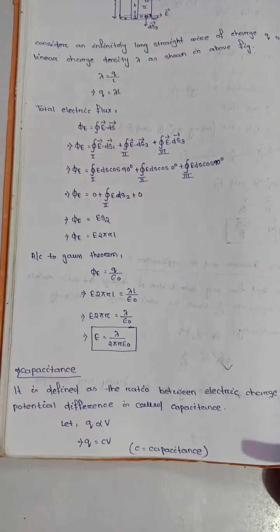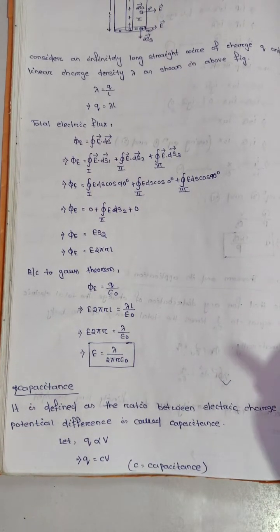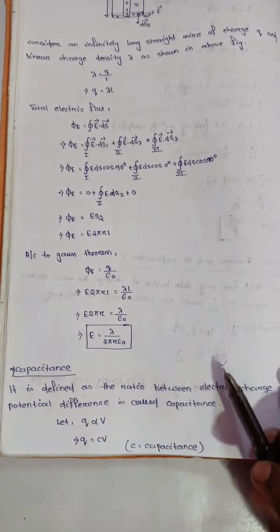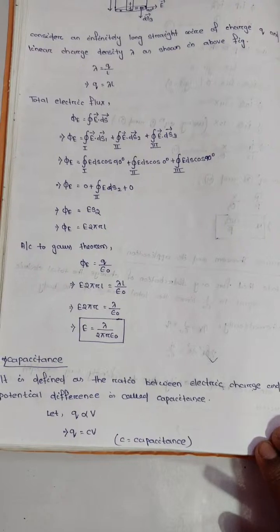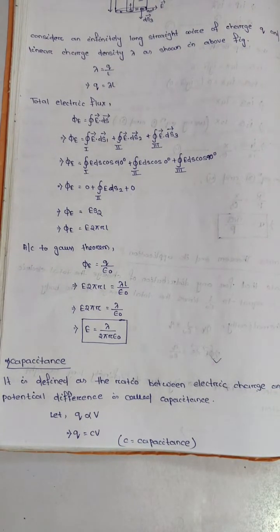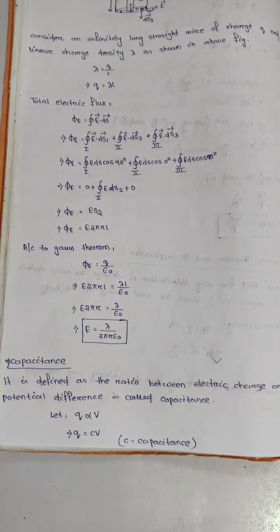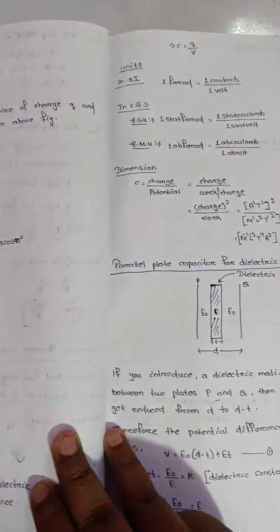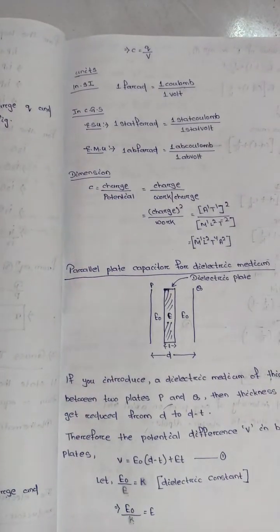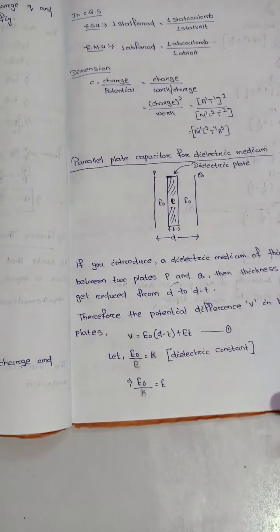Capacitance is defined as the ratio between the electric charge and the potential difference. It is the ratio of the amount of charge stored in a conductor to the difference in electric potential across it.